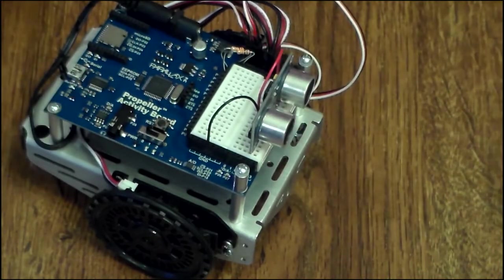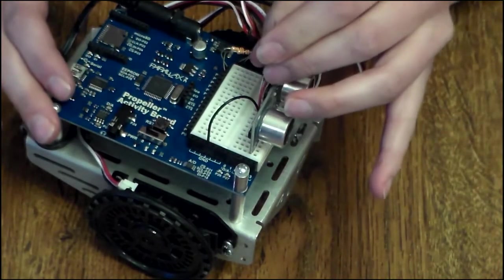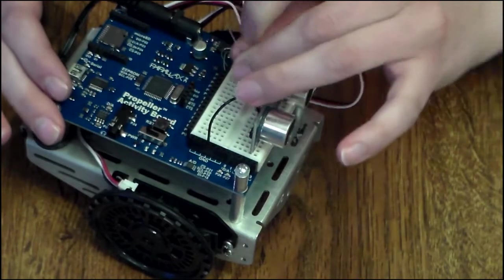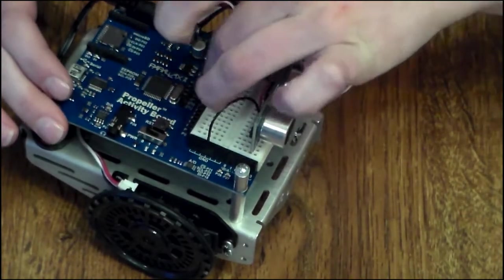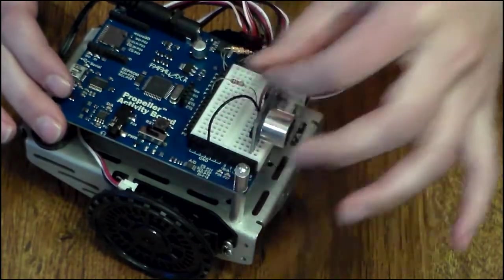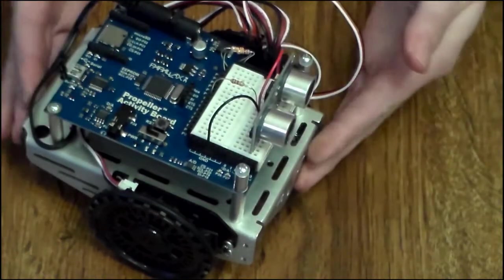And then the resistor goes to the left pin. So you'll hook the left pin to P8. And that's how you install the ping sensor.